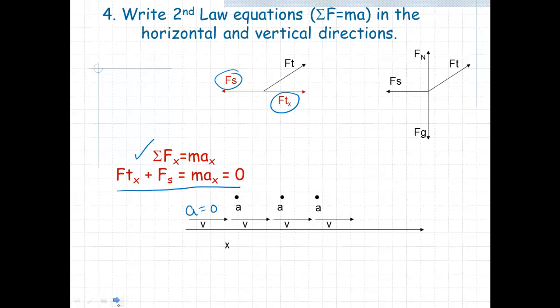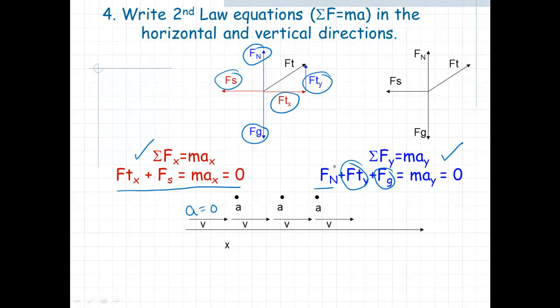Then we want to look at the vertical direction. In the vertical direction, we also want to write out the vertical equation for Newton's second law. We should identify the vertical components. We've got the normal force pointing upward, the force due to gravity pointing downward, and the force of tension also pointing in the vertical direction. These are the three forces that we know, and also because there's not any motion in the vertical, they will also equal zero.